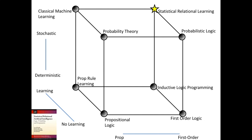If you assume a standard flat feature vector representation, you get classical machine learning. If you don't model noise and uncertainty, you get inductive logic programming. That's why some work is called probabilistic inductive logic programming. And of course there's probabilistic logic, Star AI logic, and so on. Whenever you see a cube like this from a speaker, their work will always be in the top right corner — everyone likes to put their star on top.